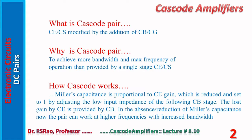Let us start the session with a question. What is a cascode pair? A cascode pair is CE modified by addition of CB — this is the BJT version. In the FET version, it is CS modified by CG. Why cascode pair? To achieve more bandwidth and to achieve larger frequency of operation than provided by a single stage CE or CS.